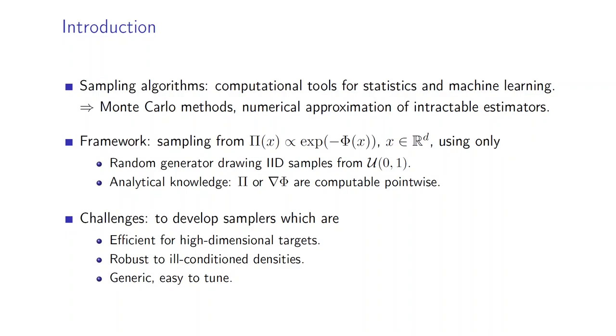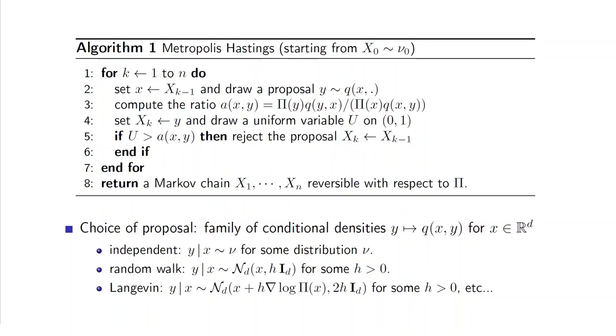We aim at solving several challenges: the first one being to develop samplers that are efficient for high-dimensional targets. We also want these samplers to be robust to ill-conditioned densities, and if possible, we want these samplers to be generic because we don't want to have to build a new sampler every time we deal with a new model.